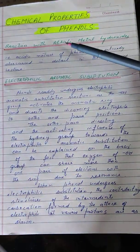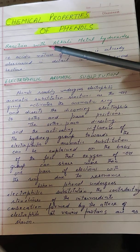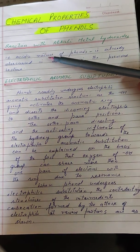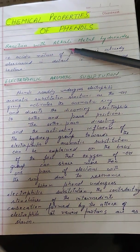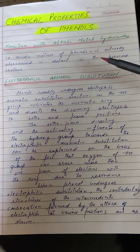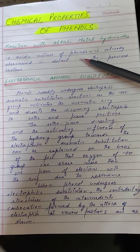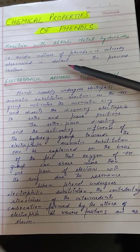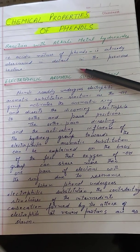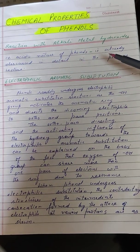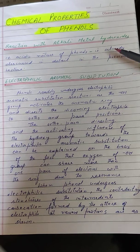The first reaction is the reaction of phenol with alkali metal hydroxides, that is the acidic nature of phenols. We have already discussed this reaction in detail in our previous lecture, phenols part 1.